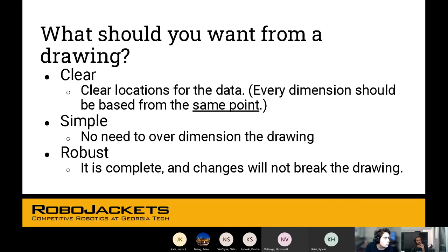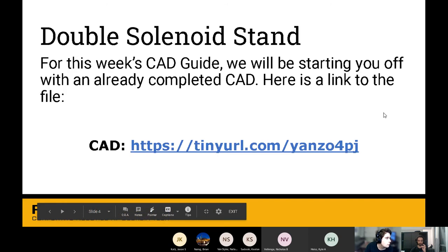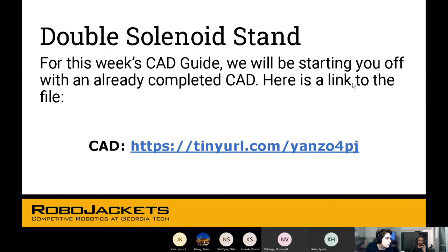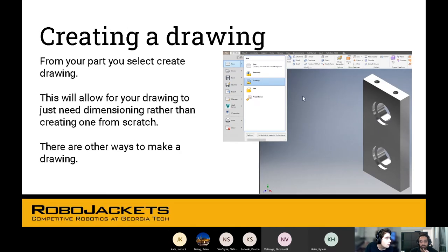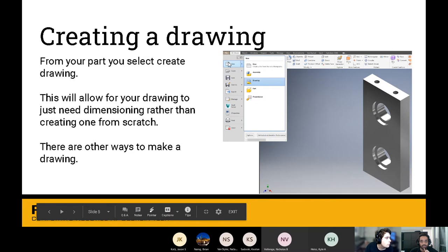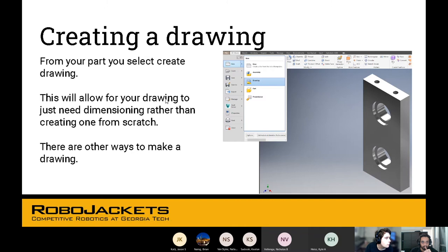What is the size and tolerances of your part? What kind of interactions are you going to have? What kind of material do you want the part to be made out of? What should you want from a drawing? Your drawing should be clear. Your dimensions should be clearly communicated. You don't have to over-dimension the drawing. Just keep it simple. It can be robust. Changes should not break the drawing. To create a drawing, first you'll take this part. You can do new drawing. This will allow you to create a drawing directly from this part. There are other ways to make a drawing, but this is the easiest one. You make your part first and then you get a drawing.